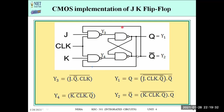Looking at the circuit: inputs are J, clock, and K. Let us assume the first gate's output is y3 and the second gate's output is y4. We assign Q as y1 and Q̄ as y2. We represent the Boolean expression in terms of y. To calculate y1 and y2, we first need to know y3 and y4, because y3 and y4 are the inputs going into the NAND latch.